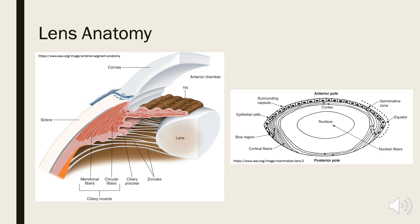The lens is enclosed in a transparent basement membrane called the capsule. The capsule surrounds a single layer of epithelial cells anteriorly, as well as the lens cortex and nucleus. The lens doesn't have a blood supply or innervation, so it receives its nourishment from the surrounding aqueous and vitreous fluid. The normal lens grows throughout life as the epithelial cells enclosed in the capsule produce new cortical fibers. Interestingly, the normal lens is approximately 35 percent protein by mass, but this percentage increases as the lens ages and cataracts develop.